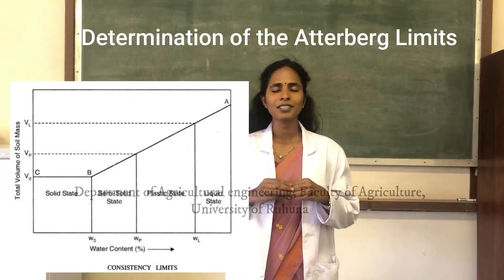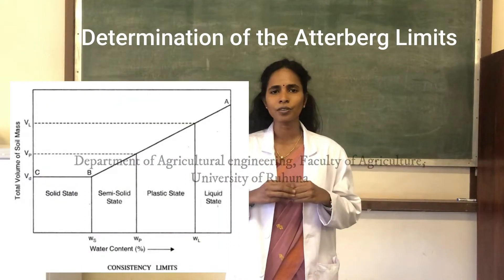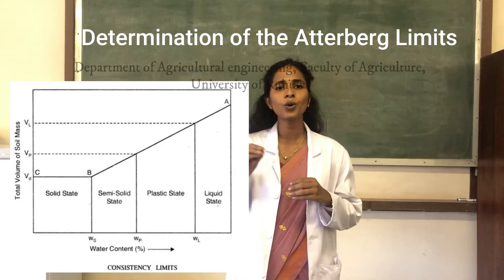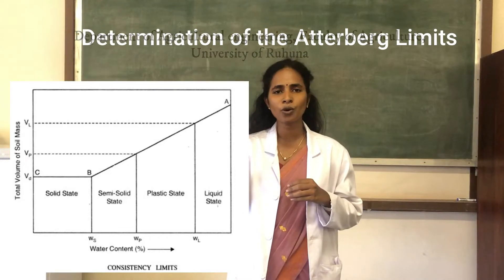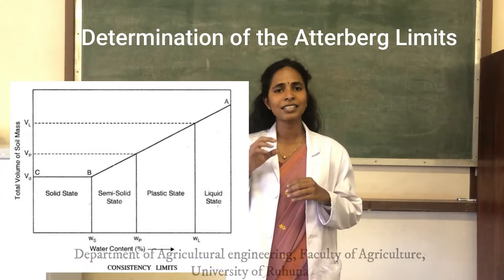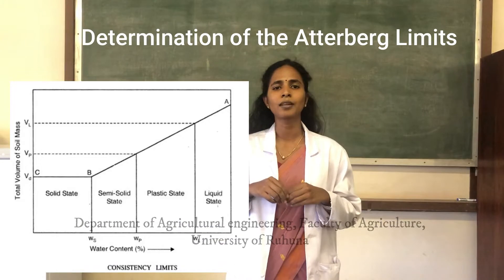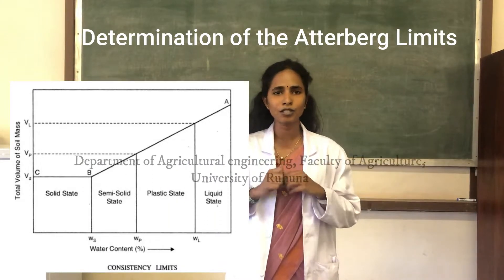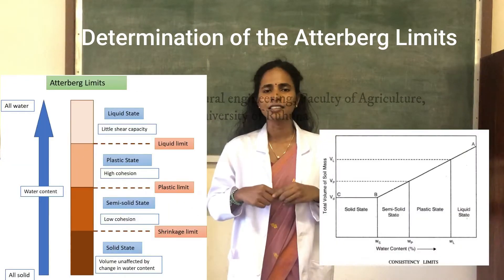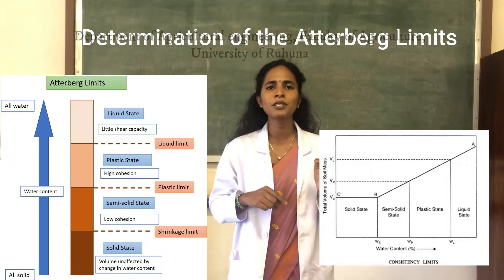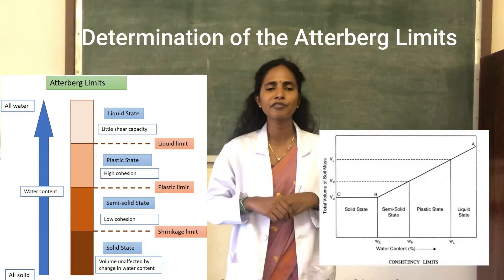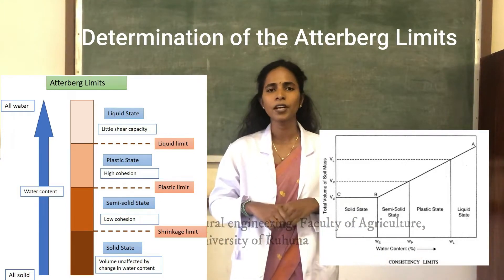When the drying process is continued further, there comes a final state where no further change in volume occurs and the water present is completely removed — this is identified as the solid state. The boundary water content when soil changes from semi-solid to solid state is identified as the shrinkage limit.